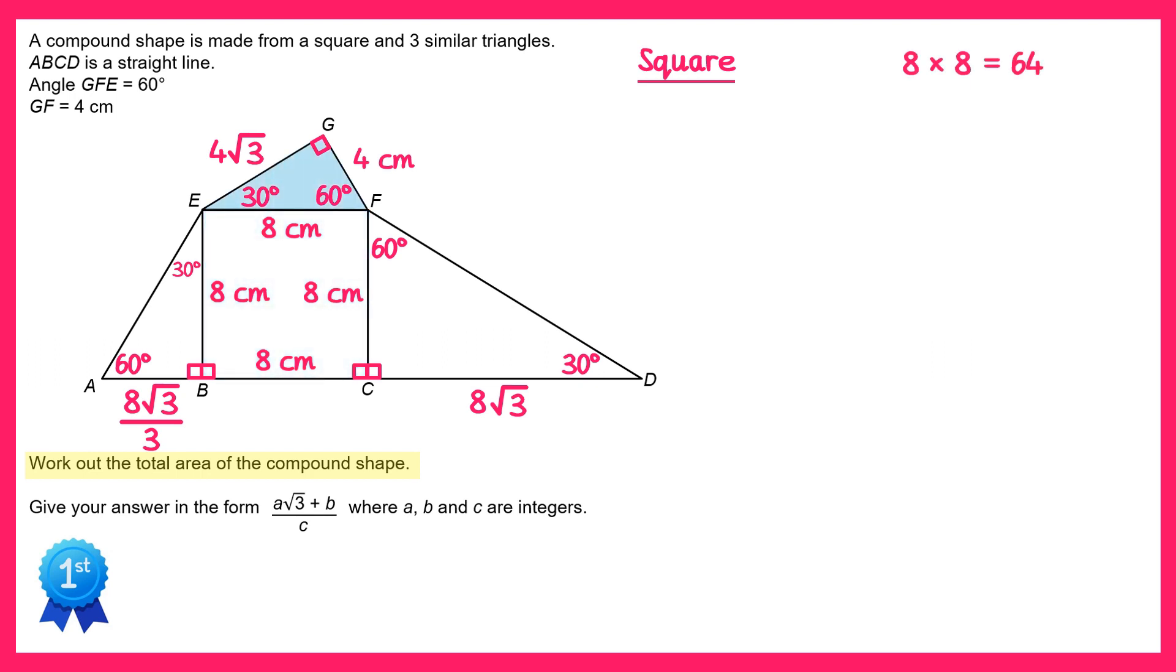Now let's look at this triangle here. To do the area of a triangle, we do half times the base, which I'm going to say is 4, times the perpendicular height, which is 4 root 3. This will give you 8 root 3.